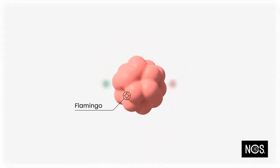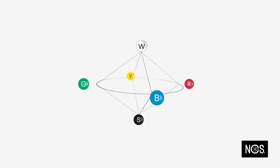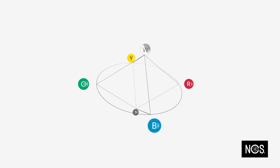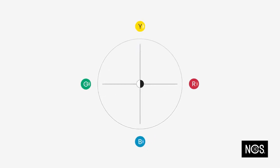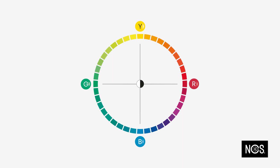Let's demonstrate by using the example of flamingo. What is flamingo? Viewing the NCS color space from above, you will find the NCS color circle. This is where you define the hue of the color. The reference points are the four chromatic elementary colors.